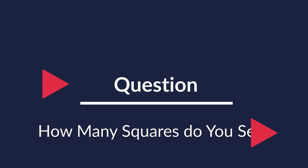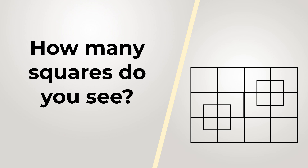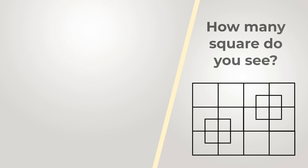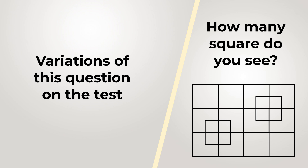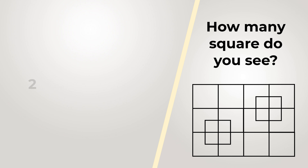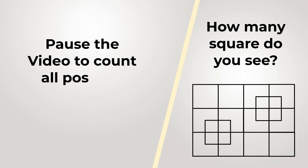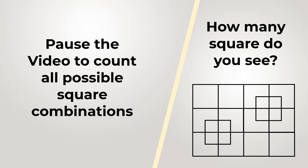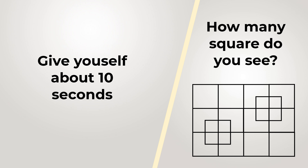I love this question — we see many variations on the test. In this version, you're presented with a 4 by 3 matrix of squares, plus two additional squares on top of the medium-sized squares. The question is: how many squares do you see in the picture? Take a closer look and give yourself some time — feel free to pause if you need more.